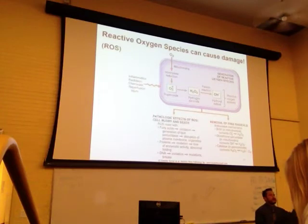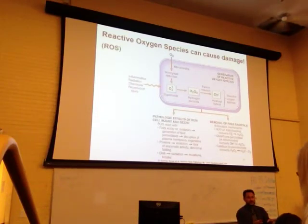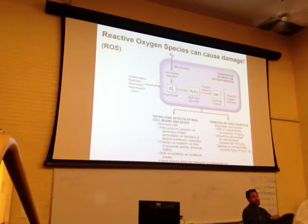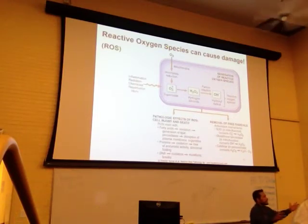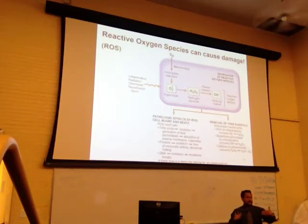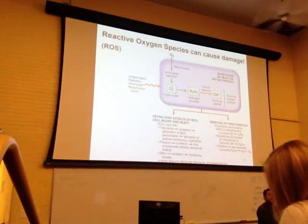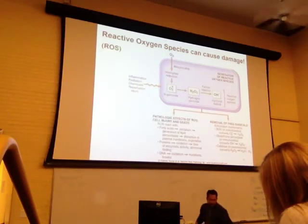Instead of spray-gunning reactive oxygen species all over your body killing everything, the body engulfs bacteria phagocytically inside a macrophage, then combines that phagosome with a lysosome containing the free radical so the reaction happens inside the macrophage. Have you ever overdone a wound with hydrogen peroxide? Because it also kills your fibroblasts — if you douse a skin wound with hydrogen peroxide too frequently, you'll actually destroy your own native tissue.